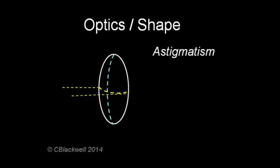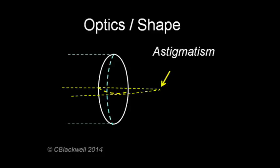In this example, horizontal rays coming through the steeper meridian are focused in one place. Vertical rays coming through the flatter meridian are focused in a different place, further back.